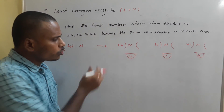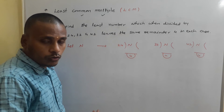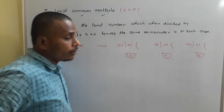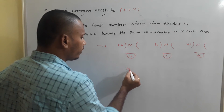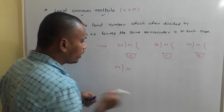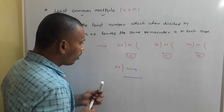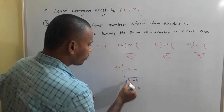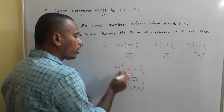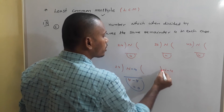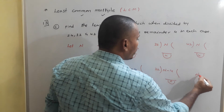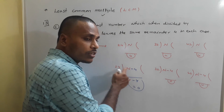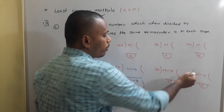Since the remainder is always 4, subtract 4 from both dividend and remainder using remainder properties. So N − 4 divided by 24 leaves remainder 0, N − 4 divided by 32 leaves remainder 0, and N − 4 divided by 42 leaves remainder 0. Therefore N − 4 is a multiple of 24, a multiple of 32, and a multiple of 42.